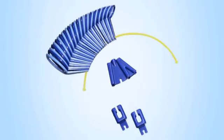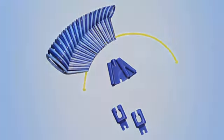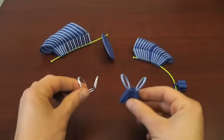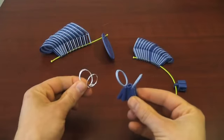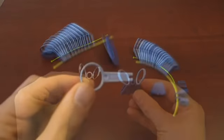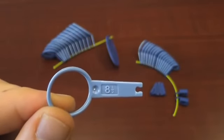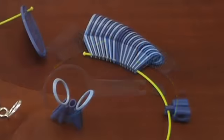To measure for a boutonniere splint, we will be using the easy-sizer tool. The easy-sizer tool has rings that have been designed to match the exact size and shape of our rings. Numbers referencing the size are located on the tabs, and alternating ring colors indicate whole and half sizes.